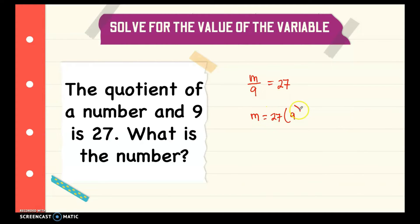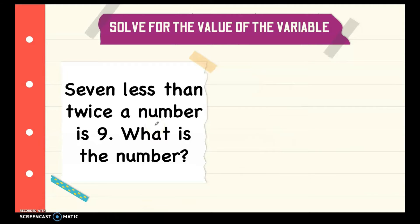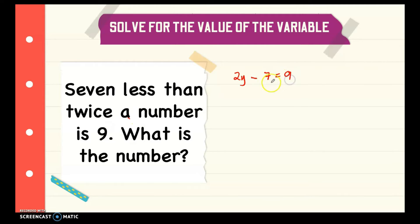27 times 9 gives m equals 243. Next, 7 less than twice a number is 9 — what is the number? Let's translate this statement to an equation. When we say 'less than,' we switch the two numbers, so twice a number is written as 2y. Then less than means subtract, so 2y minus 7 equals 9. Let's eliminate the numbers one by one by transposing to the other side. Starting with the 7: since it is minus 7, when we transpose it becomes plus 7.